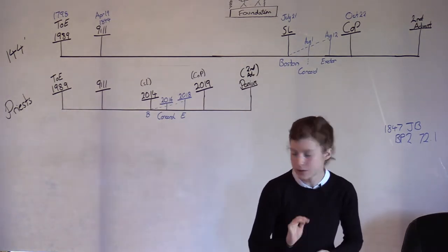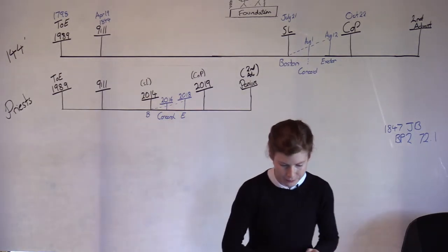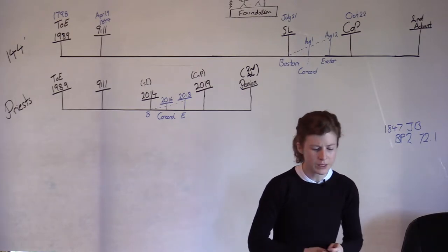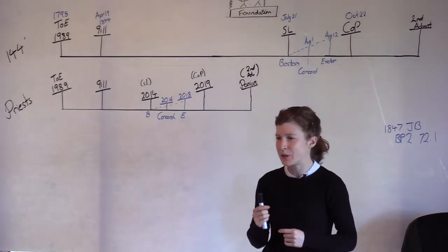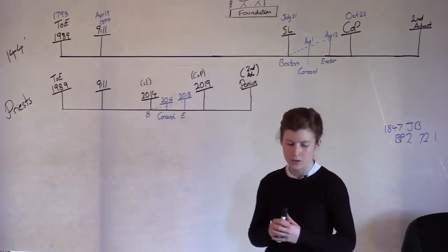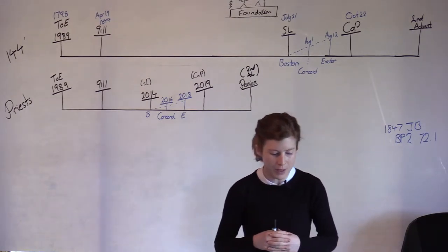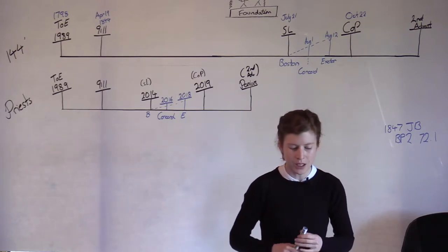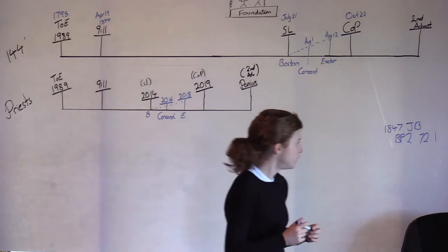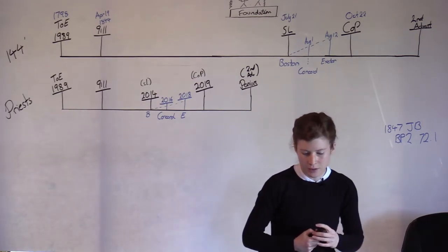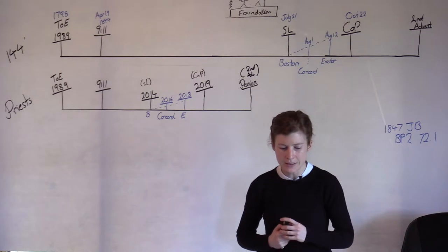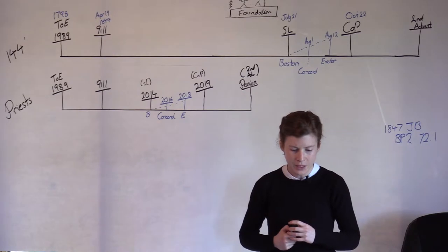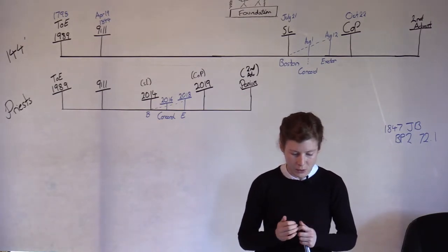So then what should we see between Sunday law and close of probation? We should see 2014 marking Boston and then we need to note Concord and Exeter. What does the word Concord mean? If you look it up in the Webster's 1828 dictionary, it will tell you that the word Concord means an agreement between persons, union in opinions, sentiments, views or interests, peace, harmony. Concord means an agreement between things, a suitableness, a harmony.